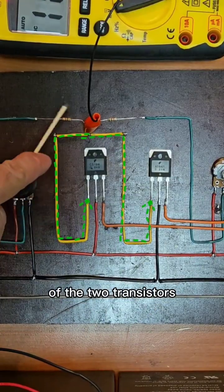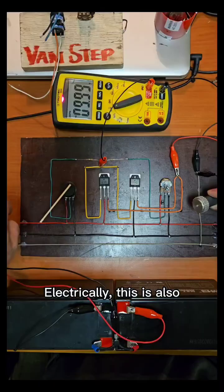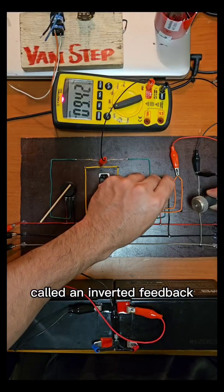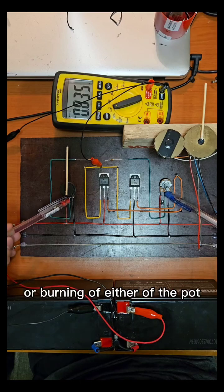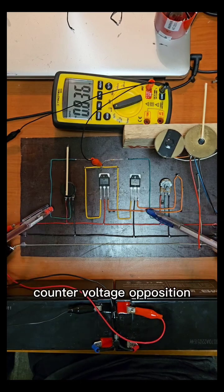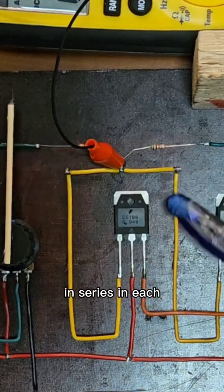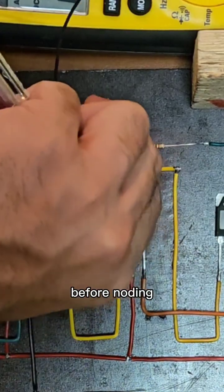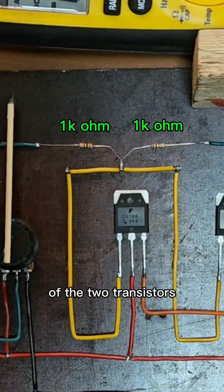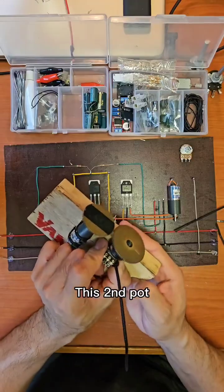Electrically, this is called inverted feedback. To prevent short circuit or burning of either pot from the maximum counter voltage opposition, I added one kilo ohm resistors in series in each pot output before connecting to the bases of the two transistors.